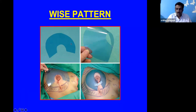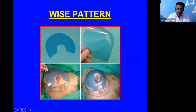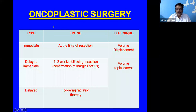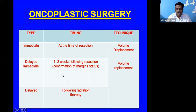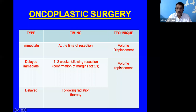The Wise pattern must be understood — if the tumor falls within the Wise pattern, the principles of oncoplastic surgery can be applied. Oncoplastic surgery can be immediate, delayed-immediate, or delayed. Immediate is at the time of resection. Delayed-immediate is when there is doubt about margins — you wait one to two weeks to confirm disease-free status. Delayed reconstruction is used after previous radiotherapy. Techniques used are volume displacement or volume replacement depending on volume and location of the tumor.